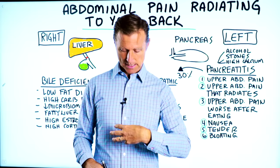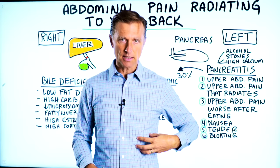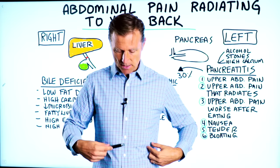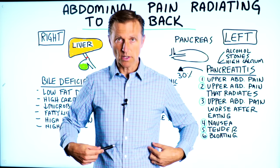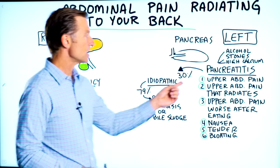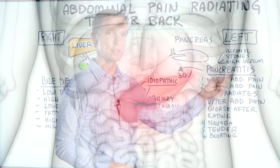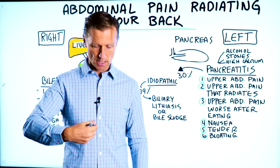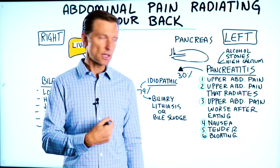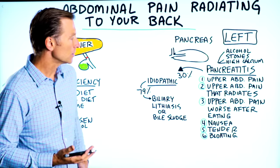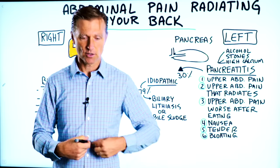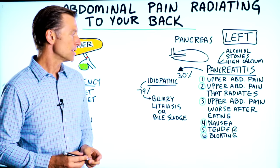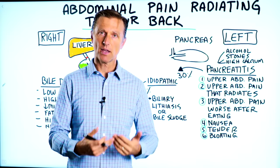If you have pain in the center or to the left side, that could be the pancreas, because the pancreas extends beyond the center, sometimes all the way over to the left. That could potentially be pancreatitis. The most common symptoms of pancreatitis are upper abdominal pain right in the center over your stomach area, upper abdominal pain that radiates around or upward, and upper abdominal pain that's worse after you eat because you're straining the pancreas.